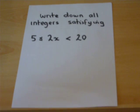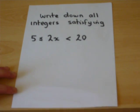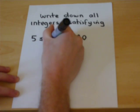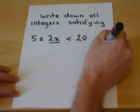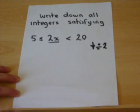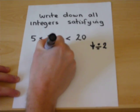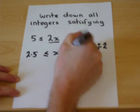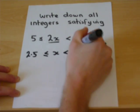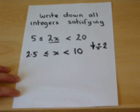Now a third type of question you might be asked is where it asks you to write down all integers satisfying a particular set of inequalities. The 2x here means that first of all you must divide by 2 to get x greater than or equal to 2.5 but less than 10. And integers means whole numbers.